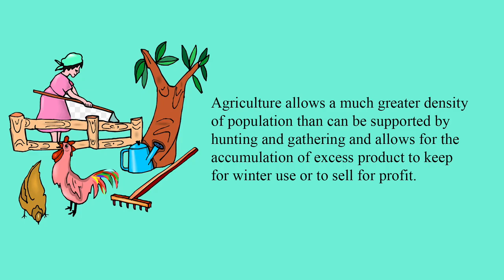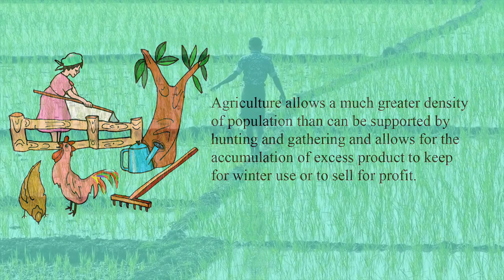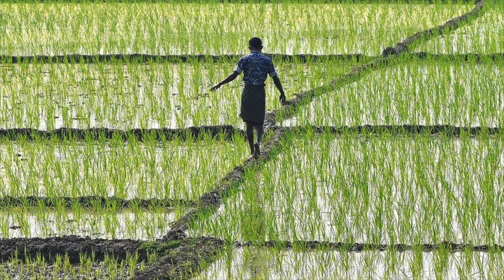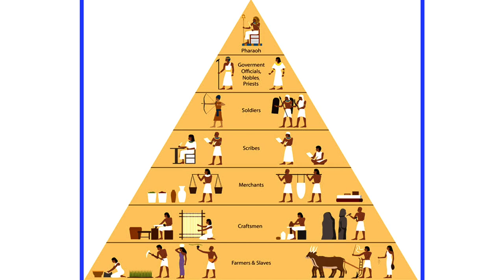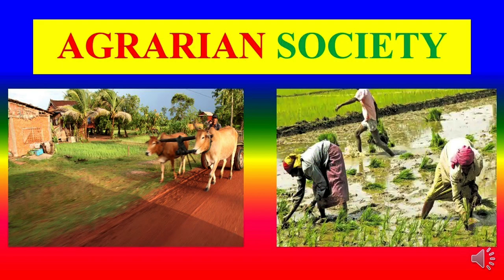Agriculture allows a much greater density of population than can be supported by hunting and gathering, and allows for the accumulation of excess product to keep for winter use or to sell for profit. The ability of farmers to feed large numbers of people whose activities have nothing to do with material production was the crucial factor in the rise of surplus, specialization, advanced technology, and hierarchical social structures like inequality and standing armies. Agrarian societies thus support the emergence of a more complex social structure.